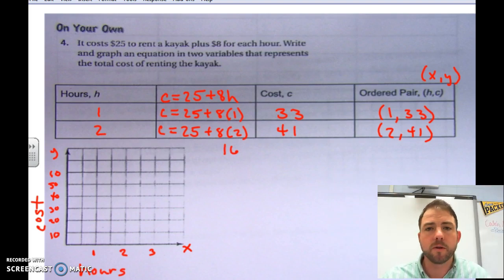So, we have two ordered pairs that we can plot. We know that, well, actually, three. We know that if we start and rent the kayak for zero hours, which isn't going to happen, that would actually be 25. That's where we're going to start. You can't get the kayak unless you pay $25, according to the equation.